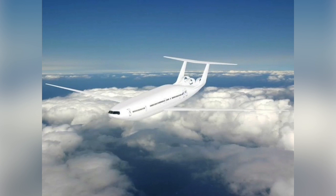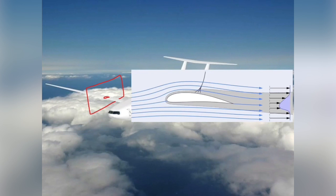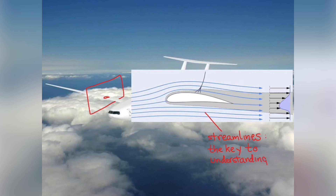We thought we'd take a second and explain what 16101X is about, and what better way to do that than with a picture of an airplane. I'm going to take a slice through that airplane's wing to produce an airfoil section. You may have noticed that we have an airfoil section in our logo. The blue lines in this logo are called streamlines, and they are the key to understanding how lift is generated on an aircraft — and what more important thing to know than why does an airplane fly.